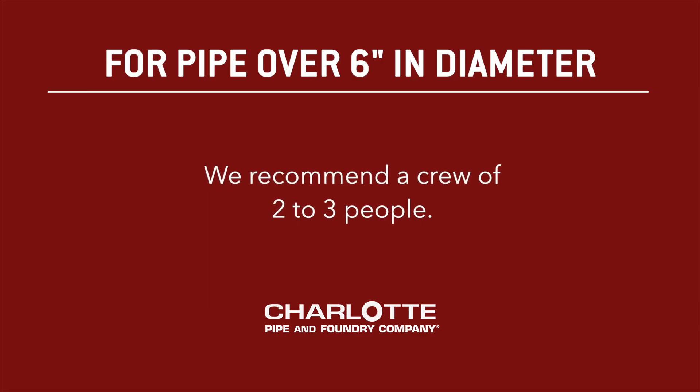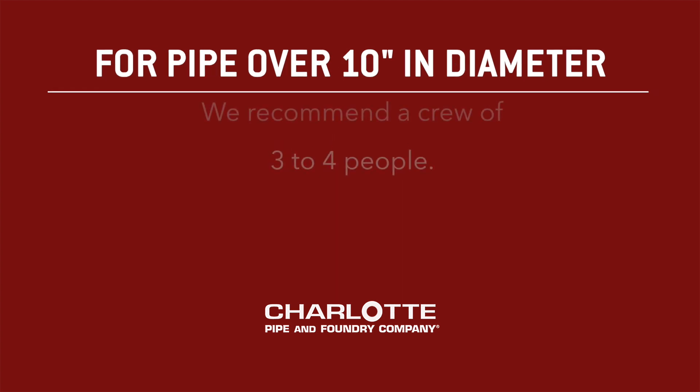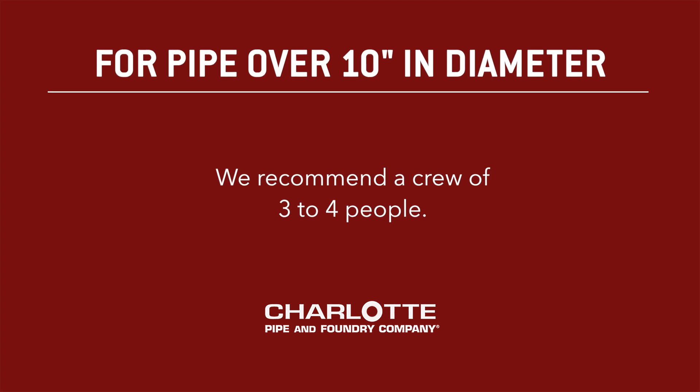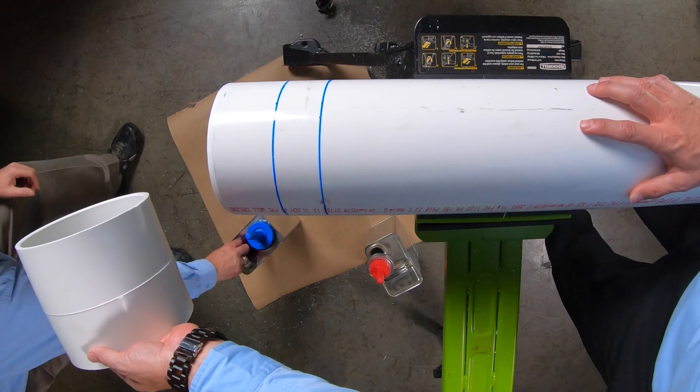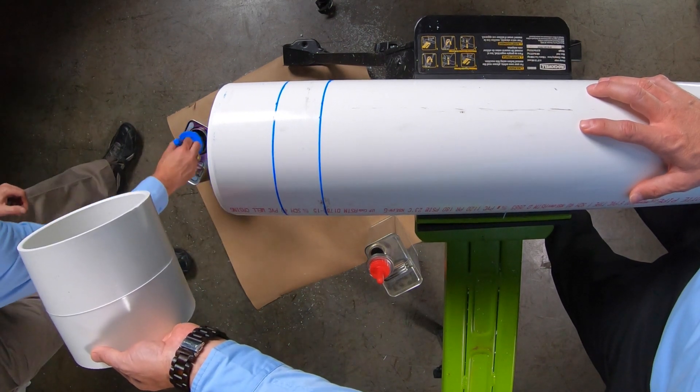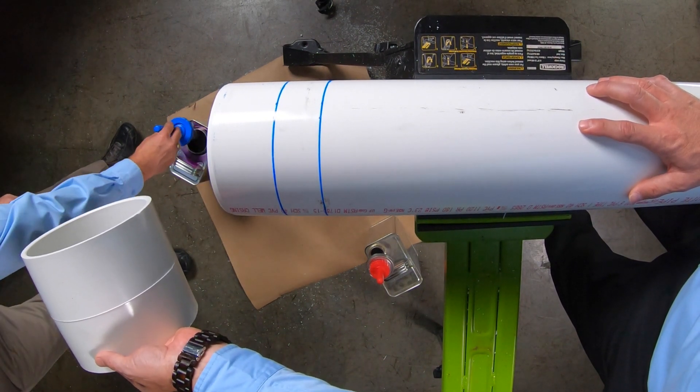With pipe over six inches in diameter, we recommend a crew of two or three people. For 10 inches and larger, a crew of three to four people. Even if you could manage to do this yourself, it is difficult, if not impossible, to put the joint together before the primer and cement begin to set.